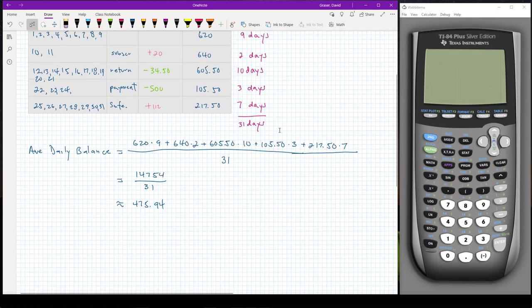All right, so now I have the average daily balance. I need to work out the finance charge, and I'm going to do that the same way I did with the unpaid balance method. I'm going to use simple interest, so I'm going to take the average daily balance.